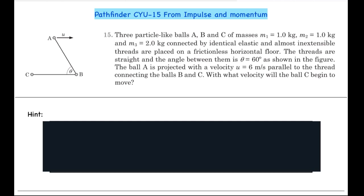The balls are placed on a frictionless horizontal floor. The threads are straight and the angle between them is theta equals 60 degrees as shown in the figure. Ball A is projected with velocity u equals 6 meter per second parallel to the thread connecting balls B and C. With what velocity will ball C begin to move?